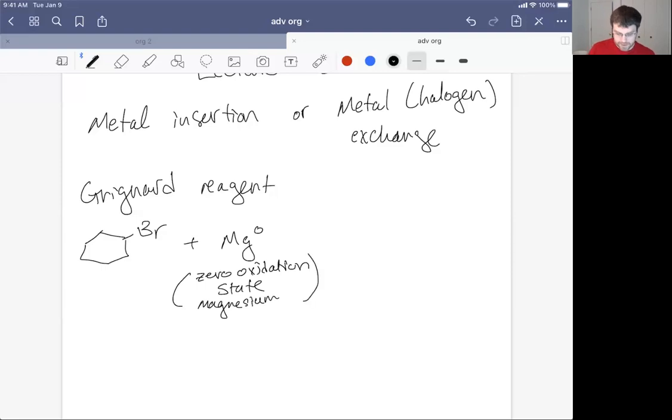And what happens is a process called oxidative addition to give rise to Mg fitting between the carbon and the bromine bond. We go from a zero oxidation state magnesium to magnesium with an oxidation state of plus two. It's countered by a Br minus and now a carbon minus.